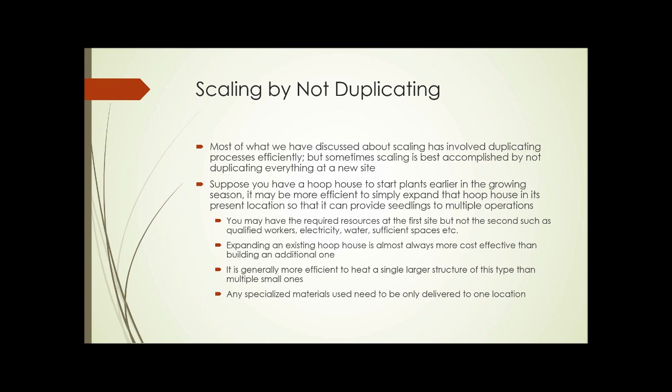This slide is called Scaling by Not Duplicating. Most of what we've discussed about scaling has involved duplicating processes efficiently, but sometimes scaling is best accomplished by not duplicating everything at a new site. For example, you may have a hoop house to start plants earlier in the growing season. It may be more efficient to simply expand that hoop house at its present location to provide seedlings to multiple operations than it is to build hoop houses at each remote location.